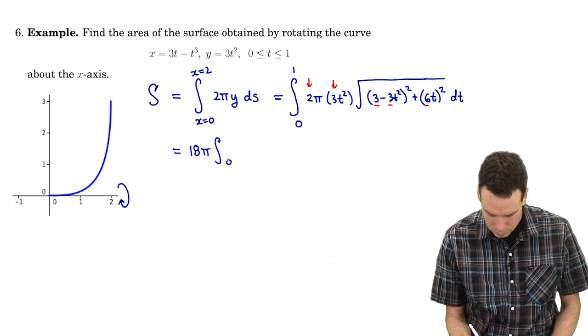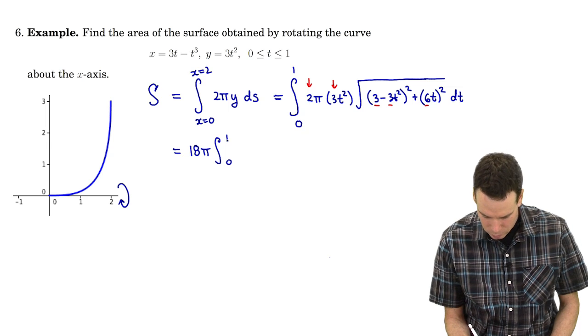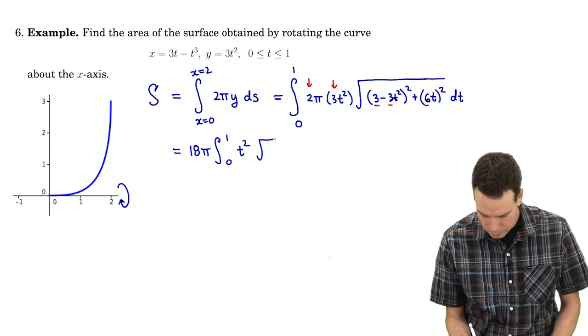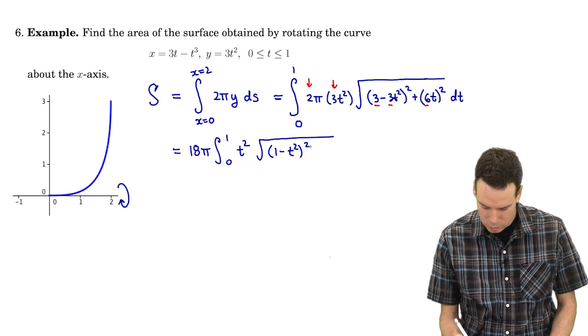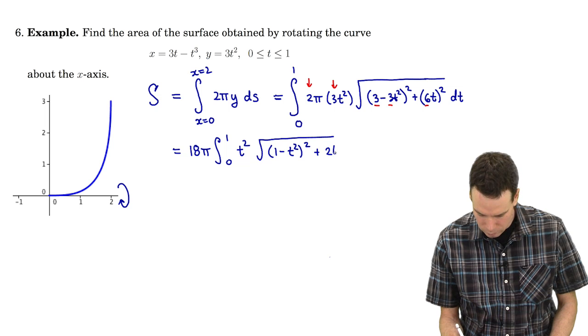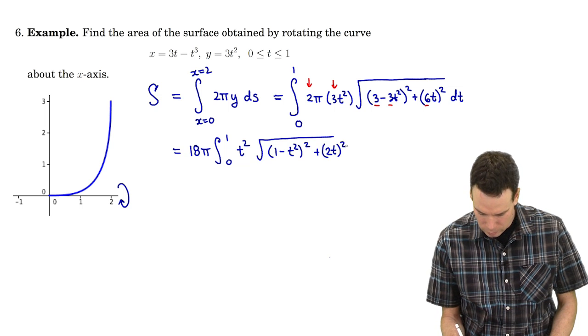18π from 0 to 1 and what was left over? There was a t². What was left over in the square root? Well I already pulled out the factors of 3 from that first term plus I pulled out the factor of 3 from the next one.